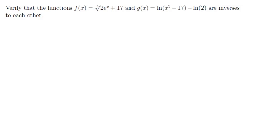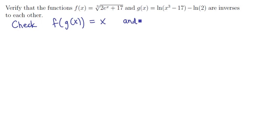Verify that the functions f of x equals the cube root of 2e to the x plus 17, and g of x, which is the difference of ln of x cubed minus 17 and ln of 2, are inverses to each other. Remember that this just means we have to check two conditions: that f of g of x is always equal to x, and that g of f of x is always equal to x. These are the two mutual annihilation conditions.